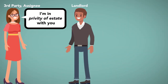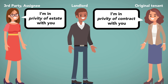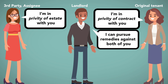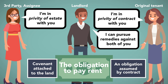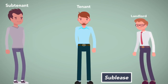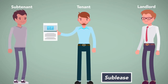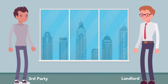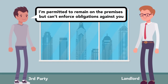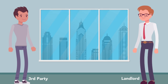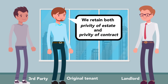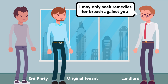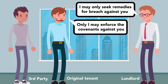Note that while the third party is in privity of estate with the landlord, the original tenant remains in privity of contract with the landlord. This means that the landlord can pursue remedies against both the original tenant and the assignee if the obligation, such as the obligation to pay rent, is both a covenant attached to the land as well as an obligation assumed by contract. In the case of a sublease, when the subtenant will relinquish possession back to the tenant rather than back to the landlord, the third party is permitted to remain on the premises but cannot enforce obligations against the landlord. Under such circumstances, the landlord and the original tenant retain both privity of estate and privity of contract. The landlord may only seek remedies for breach against the original tenant, and only the original tenant may enforce the covenants against the landlord.